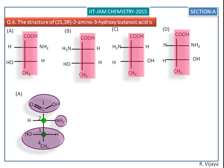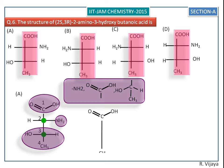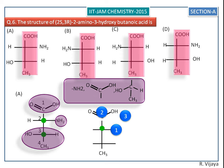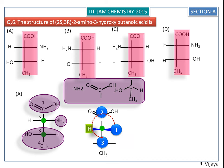For the A structure, we first assign the RS configuration for the second carbon atom. We fix the priorities. The higher priorities rotate in an anticlockwise direction, so it is supposed to be 2S, but it is not, because the least priority hydrogen is towards the observer.